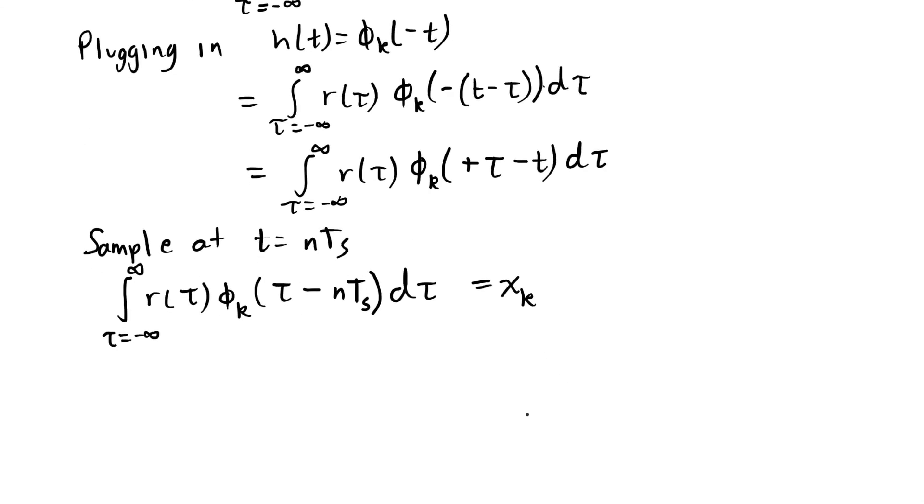So the convolution form is nice because the filter is running all of the time and it keeps track of its own state. Every filter is doing its own thing, storing the values that it needs to calculate its output, and the output gets sampled every t sub s. So we don't need to wait once every t sub s and then do a new infinite integral. So we'll see that this is a really important way to manage the computation and have a real-time receiver. We'll see this when we do our MATLAB and Python simulations.